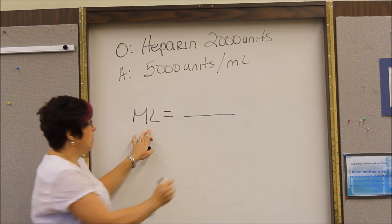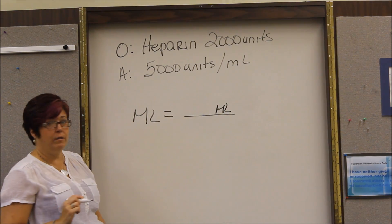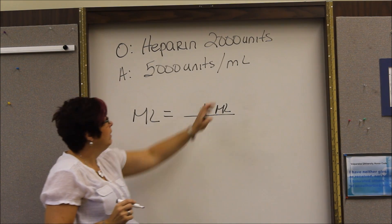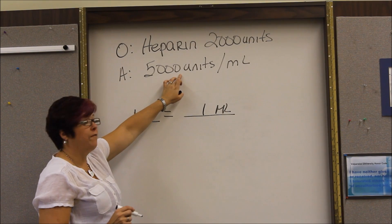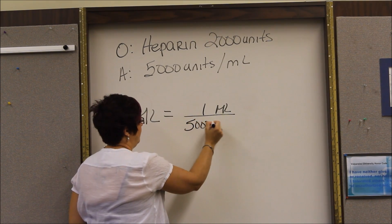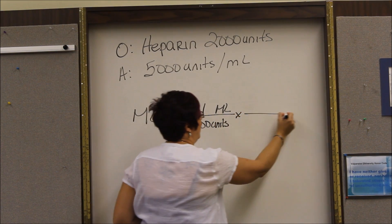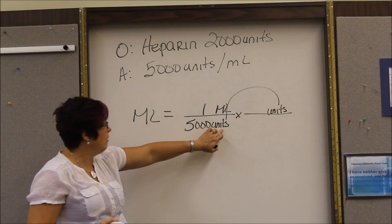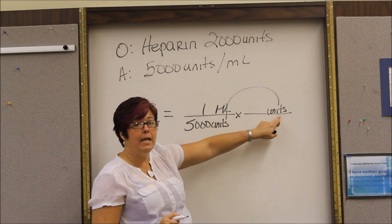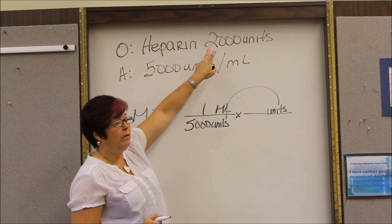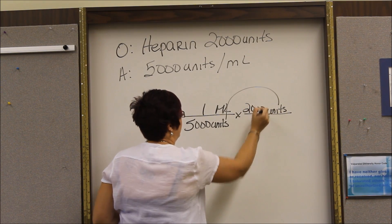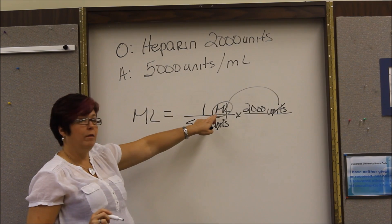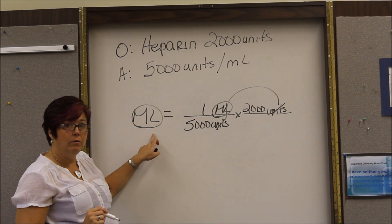Now remember what is over here, that's what we have to start with. So if we look for our milliliters, we have one milliliter, the one milliliter is married to the 5,000 units. Unit that's down here is the unit that comes over here on top so that they cancel out. Doctor ordered heparin, 2,000 units. Are we done? Let's start canceling out. We're left with milliliter which is what we're looking for so we can do our math.